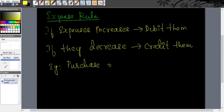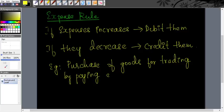For instance, if a business purchases goods for trading, then the purchase of goods would be treated as an expenditure, and such expenditure shall be debited.